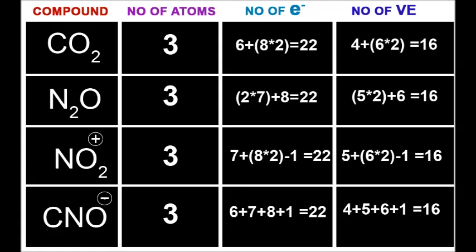Nitrogen has 7 electrons. Each oxygen is 8. 8 plus 8 is 16, giving a total count of 23. Since there's a positive charge, we subtract 1. So the total number of electrons is 22.